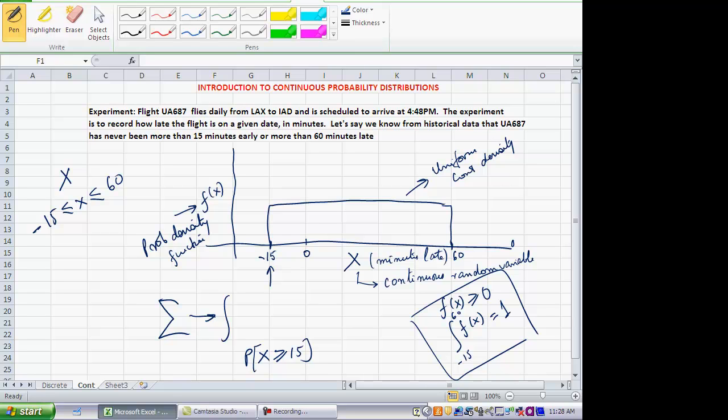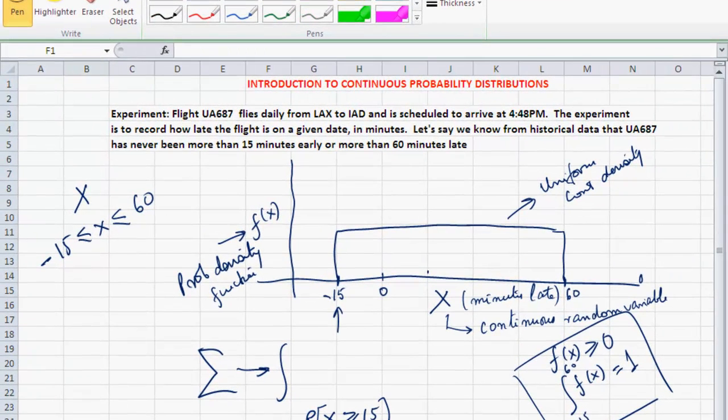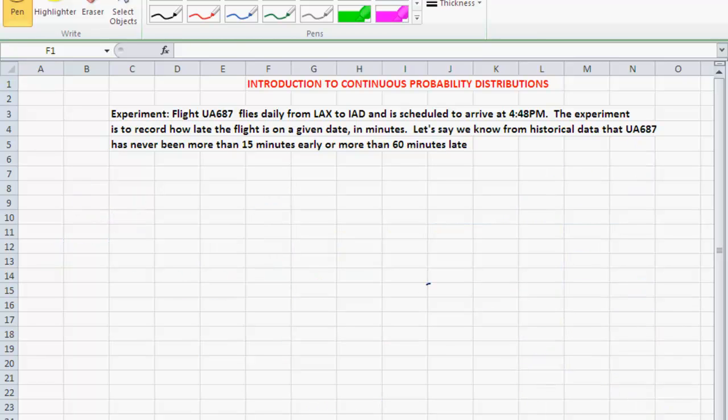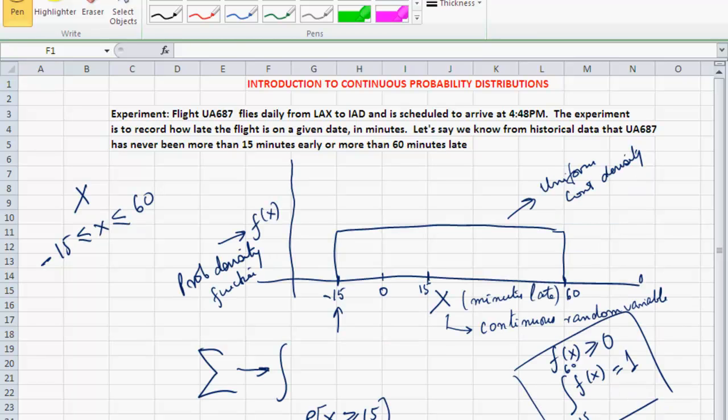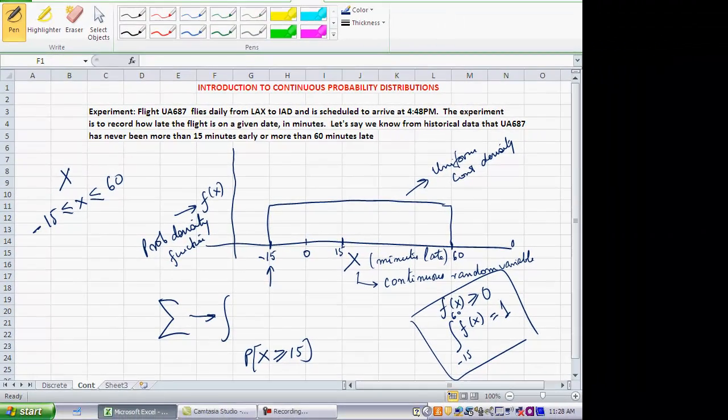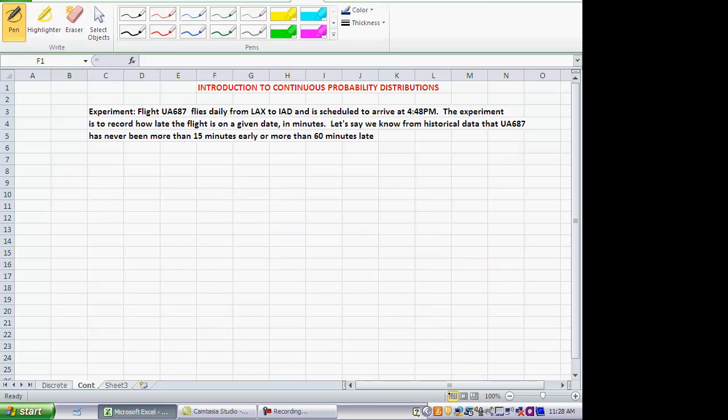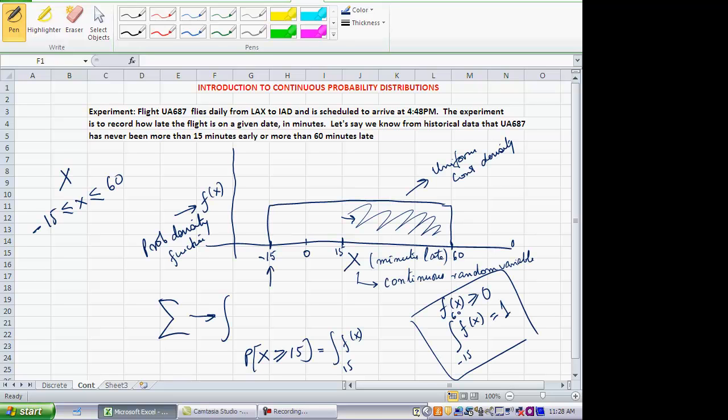So instead of adding up all the spikes, we will do these calculations later on in another video clip. But I think geometrically it's not that hard to determine what you have to do. So here is X equal to 15, 15 minutes late. So if I want to know what is the probability that the flight will be greater than or equal to 15 minutes late, I really want to add up all the spikes over here on the right hand side. Which is really the integral of this, whatever this shape is from here on to the right. So this would simply be the integral of the density function from 15 to 60.